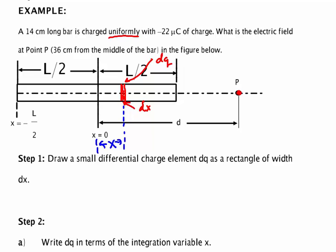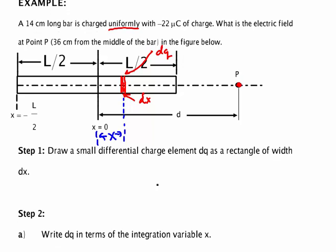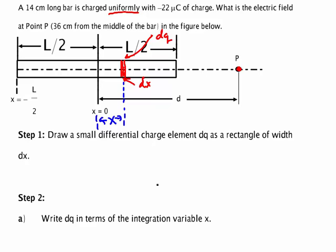The next thing it asks us to do, after we draw that small infinitesimal charge, is to write dq in terms of the integration variable. Well, dq is always equal, for one of these linear problems, to lambda dx. So what I really need to do is find lambda, and lambda is the total charge on the bar divided by the length of the bar. So that's just q over l, times dx.